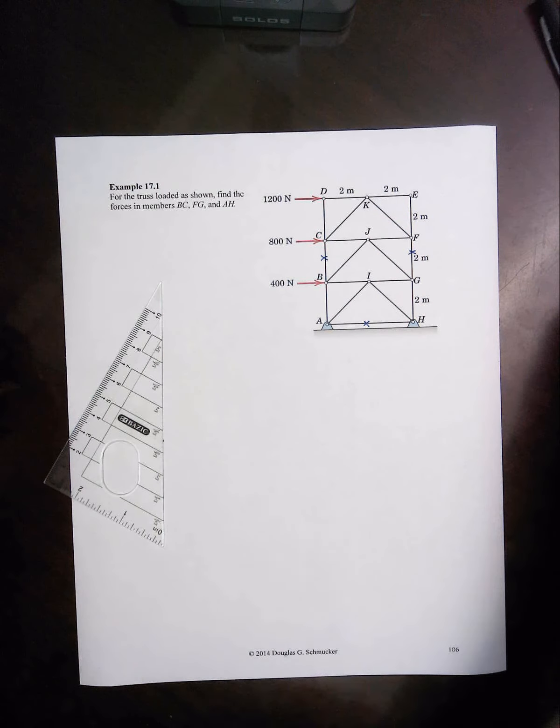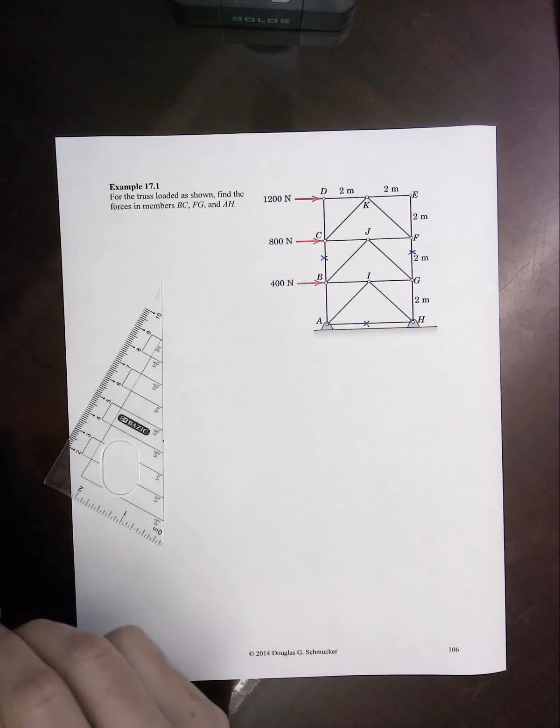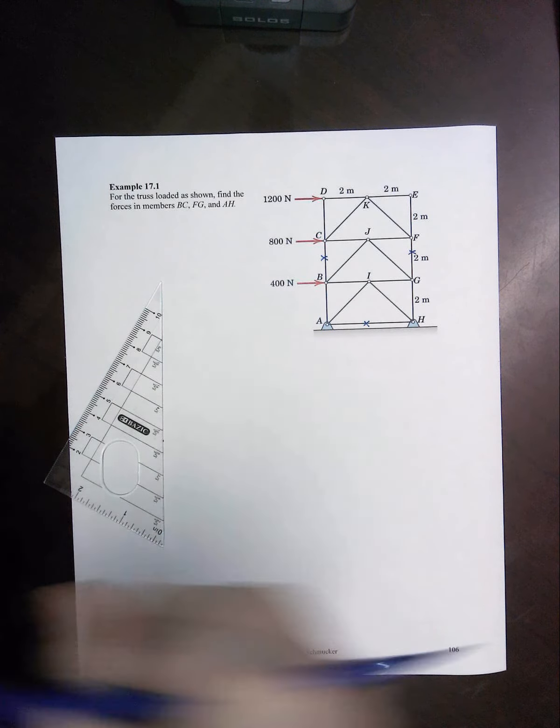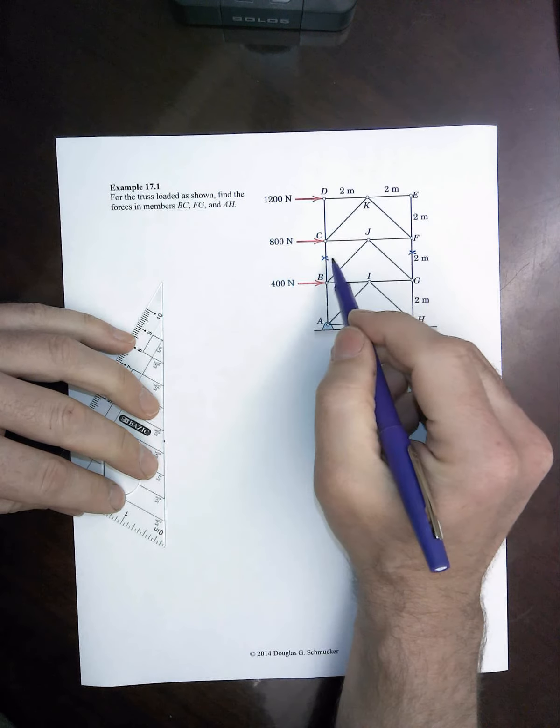There's a variety of approaches we could take, method of joints or method of sections, but at least those are the formal titles. In reality, all we've got to do is figure out the quickest, easiest way to figure out these things.